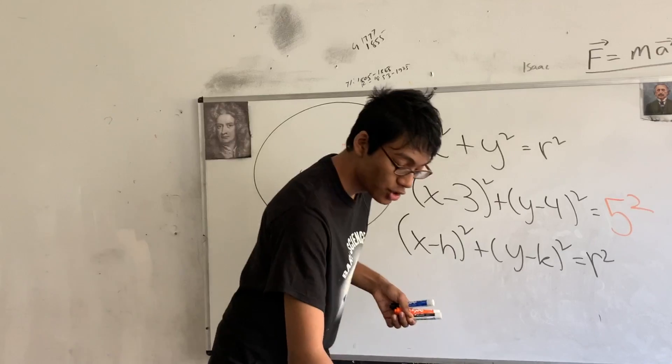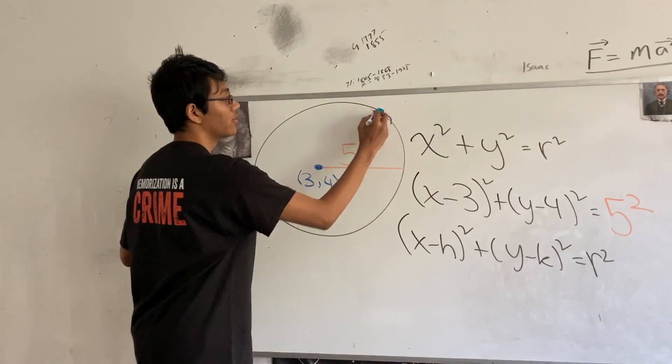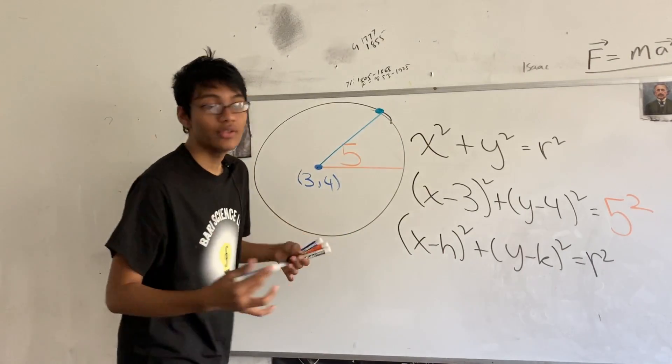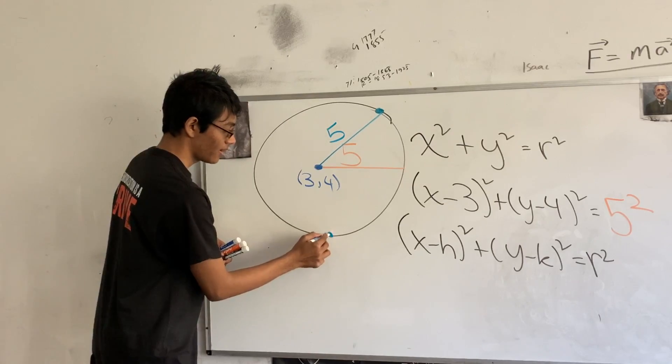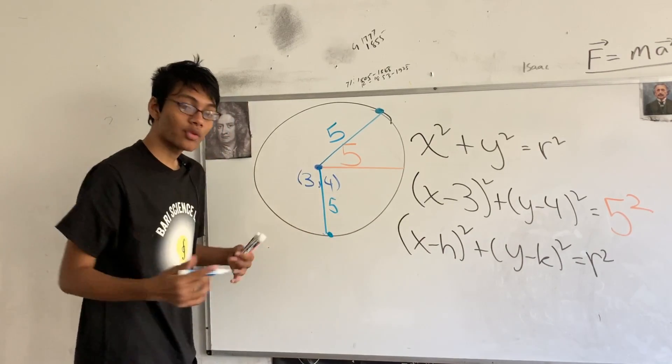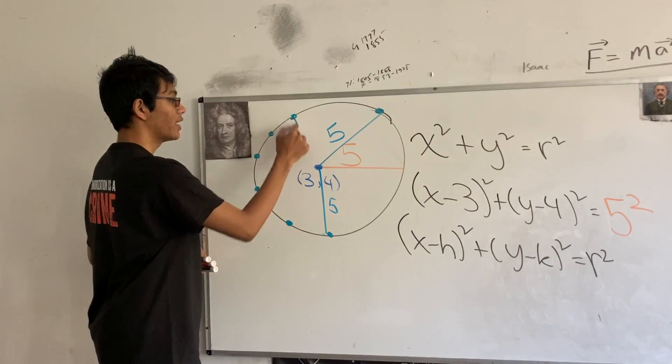Let me go ahead and show you on that final note what that means. So, let's say I pick a point on the circle. Well, what distance is it going to be from the center? It's going to be 5 units from the center. Likewise, let's say I pick this point. What distance is that going to be from the center? 5 units. No matter what point you pick on the circle, they're all going to be 5 away from the center.